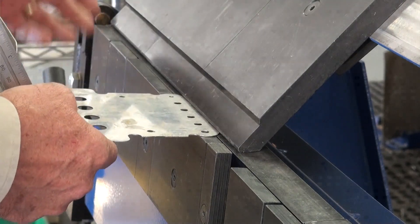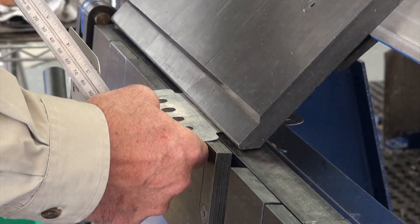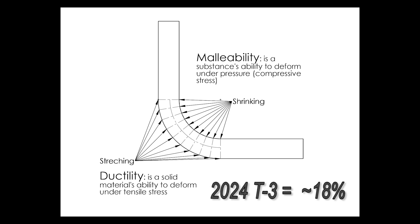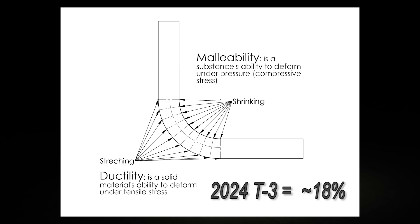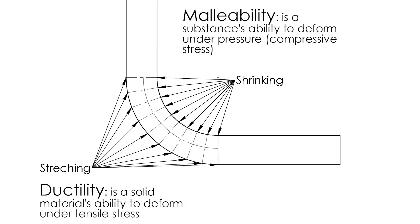Understanding the properties of each of the aluminum alloys becomes very important during the sheet metal layout and bending process. In particular, the malleability and ductility. By definition, ductility is the solid material's ability to deform under tensile stress, and malleability is the ability of the material to deform under compressive stress. The ductility of 2024-T3 is about 18%. When bending aluminum around a radius, we can see that we are both stretching one side of the aluminum — this is ductility — and compressing the other side of the aluminum — this is called malleability.